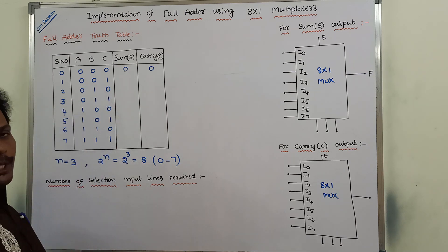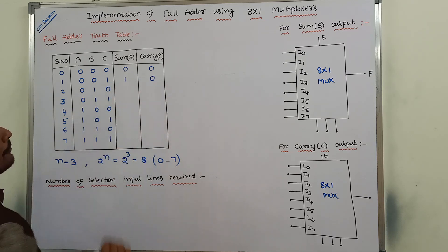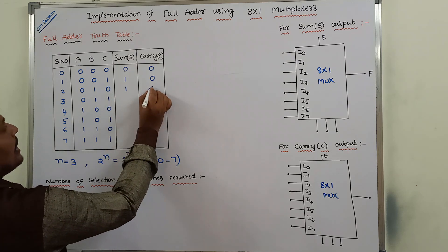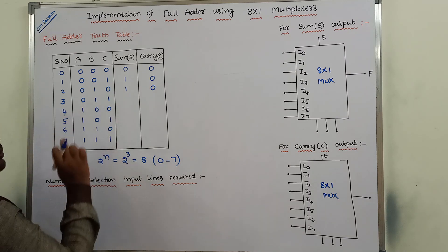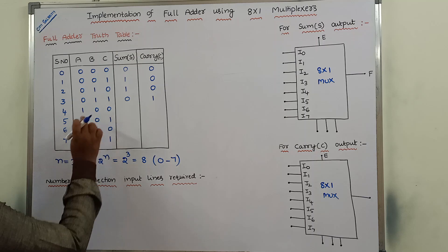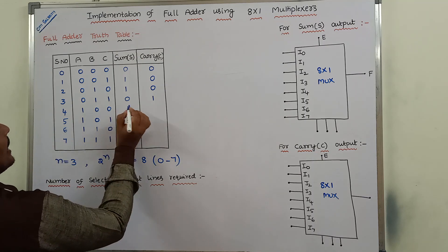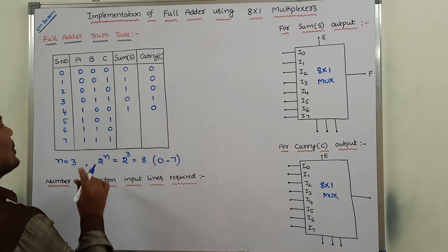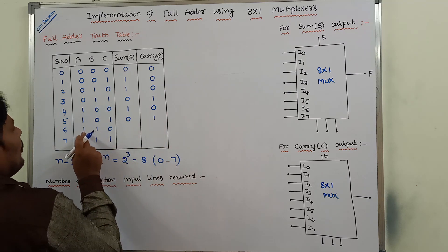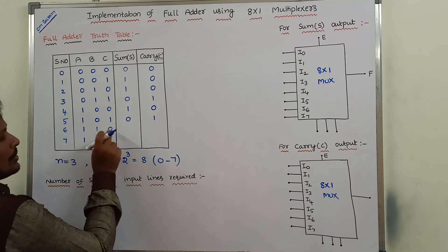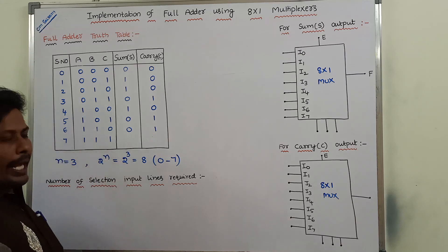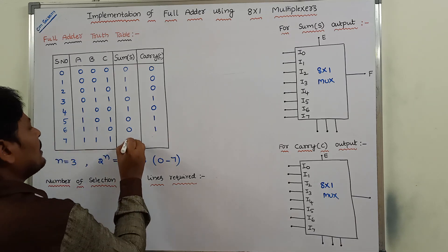Next, 0+0+1 gives sum 1, carry 0. 0+1+0 gives sum 1, carry 0. 0+1+1: 1 plus 1 gives 0 with carry 1, so sum 0, carry 1. 1+0+0 gives sum 1, carry 0. 1+0+1: 1 plus 1 gives 0 with carry 1, so sum 0, carry 1. 1+1+0: 1 plus 1 gives 0 with carry 1, so sum 0, carry 1. Finally, 1+1+1 is 1 with carry 1, so sum 1, carry 1.